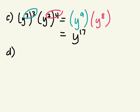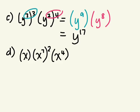What about part D? We have x times x to the power of 7 to the power of 2 times x to the power of 4. Which part of this expression should we simplify first? X to the power of 7 to the power of 2 — our power of a power. So we have x...